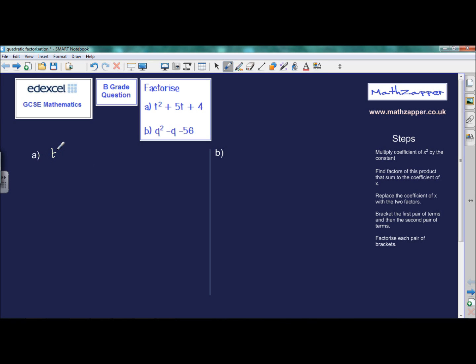Start with a. So we have t squared plus 5t plus 4. On the right-hand side of the screen, we've got some steps that we're going to follow. Following these steps one by one, we'll get a satisfactory factorization completed, if it can be factorized. Both of these examples can be factorized.